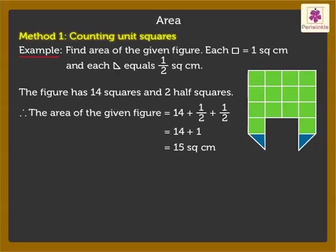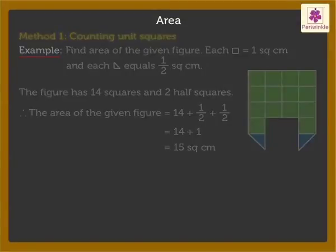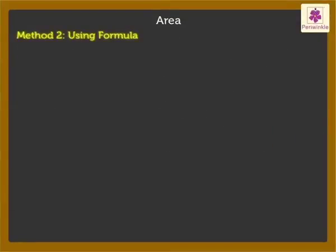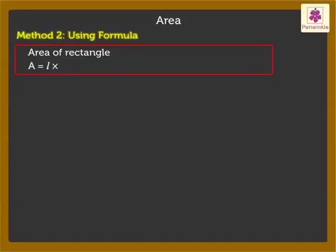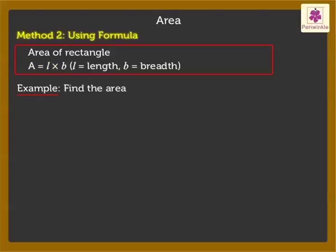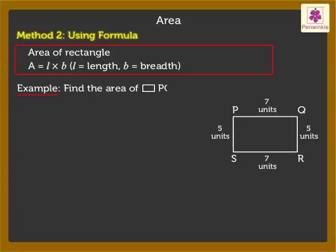Now let's see how to find the area using formulas. The area of a rectangle can be found by using the formula A = L × B, where A is the area, L is the length, and B is the breadth of the rectangle.